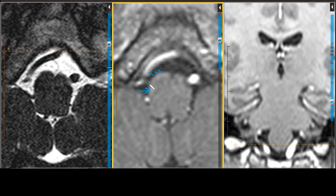Now what does the nerve do? When it comes in, it actually has a posteromedial course where it sits directly underneath the fourth ventricle as the hypoglossal nucleus. Now there are two paired nuclei, so there's obviously a hypoglossal nerve coming out the other side as well — I'll draw it a little bit crooked, but no matter.